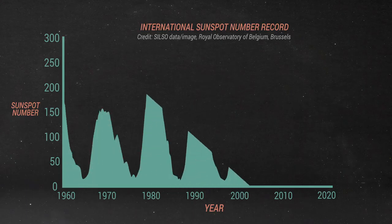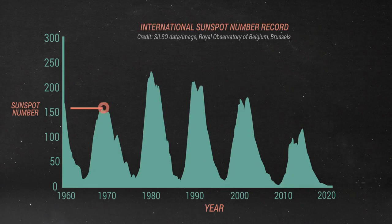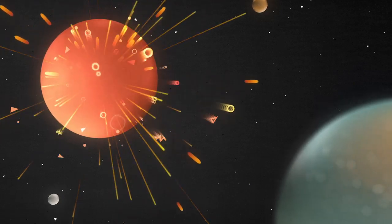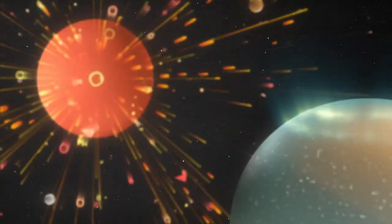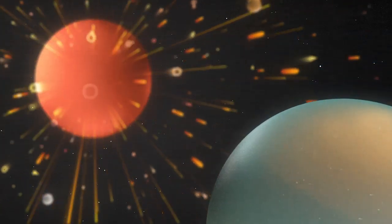Solar maximum, the period of highest activity, can vary wildly from cycle to cycle. The more sunspots there are, the higher the frequency of solar storms of all types, some that create aurora and some that can affect power grids on Earth.